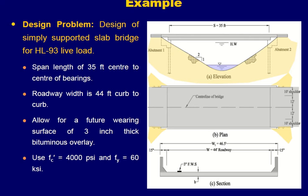Continuing from the previous video, we are going to solve a numerical example of bridge design. The problem states: design a simply supported slab bridge for HL-93 live load. The given data is a span length of 35 feet center to center of bearings, roadway width of 44 feet curb to curb, allow for a future wearing surface of a 3-inch thick bituminous overlay. Concrete strength is 4000 psi and steel yield strength is 60,000 psi.